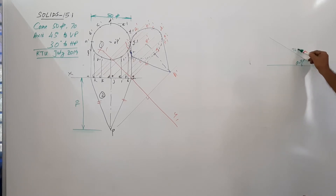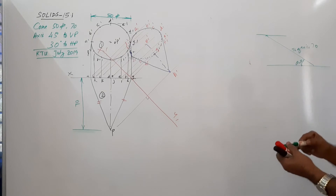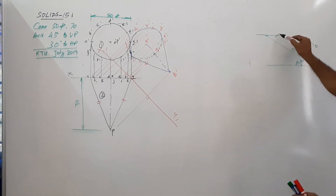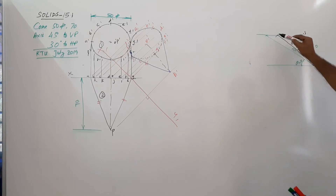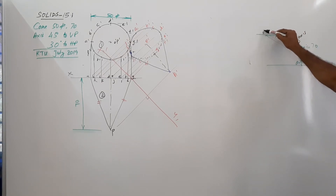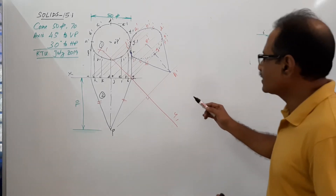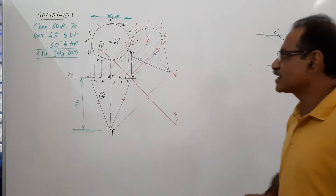The true length of the axis is 70. Locate the point, draw a notch, take the elevation length of axis and cut an arc. This distance is the elevation length of axis. This angle is called alpha. Find alpha, and since the apex is nearer to HP — the question says the apex is nearer to HP.